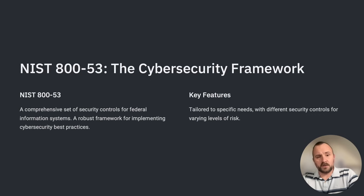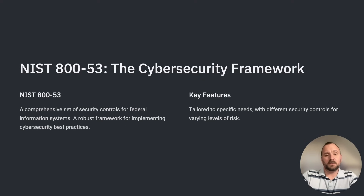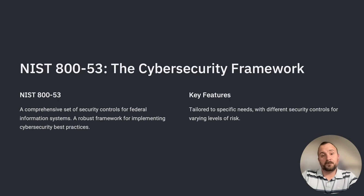NIST 800-53 control families include: access controls — ensuring that only authorized individuals have access to systems and data; awareness and training — educating employees about security risks and best practices; audit and accountability — tracking user activity and maintaining audit logs; configuration management — ensuring that systems and software are properly configured; and identification and authentication — verifying the identity of your users.